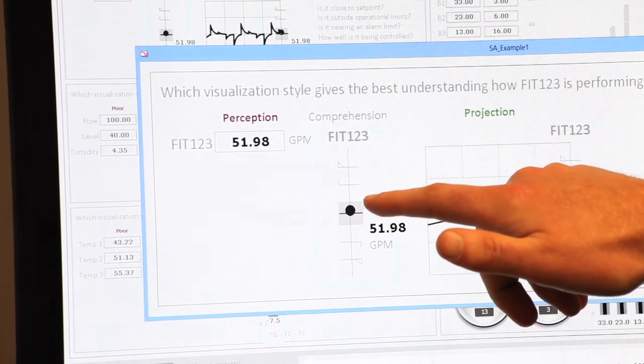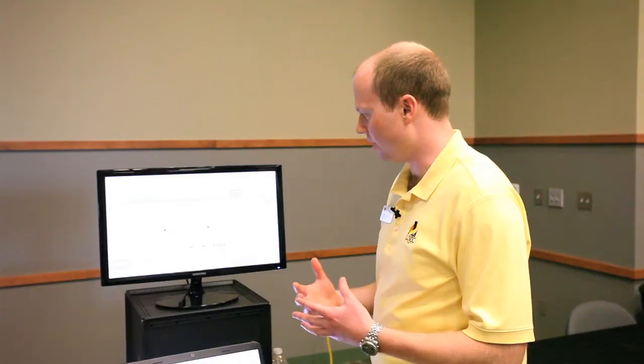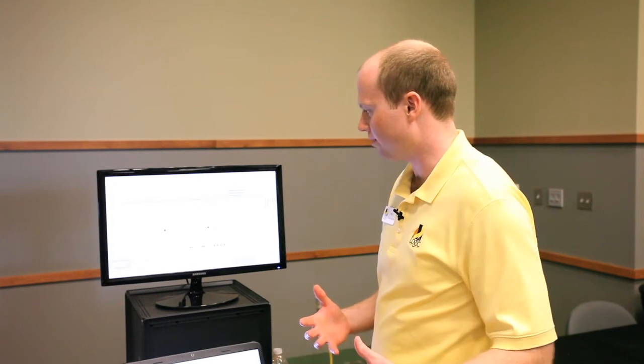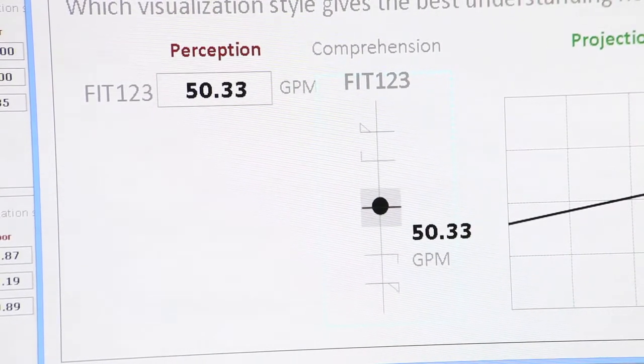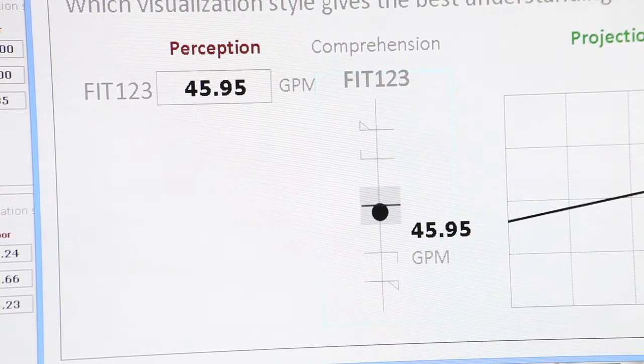The benefit of this graphic is the operator knows, am I close to a set point? Am I in the normal operating range? With a traditional graphic they'd have to look that up in a manual, memorize it, or ask a co-worker.